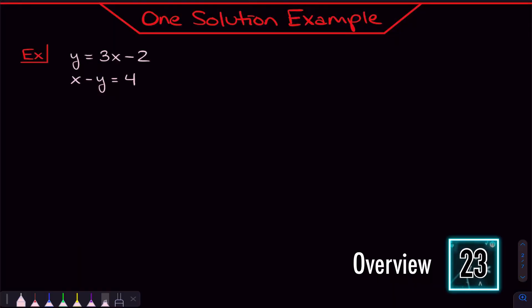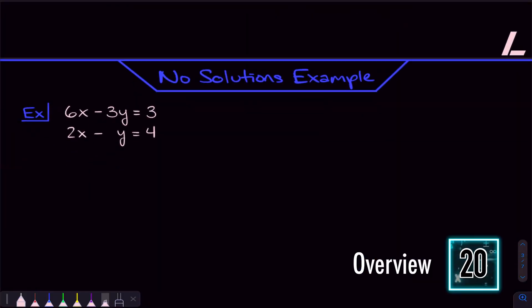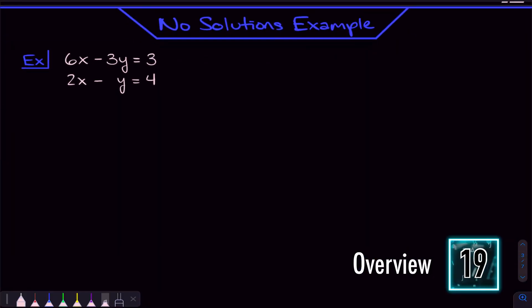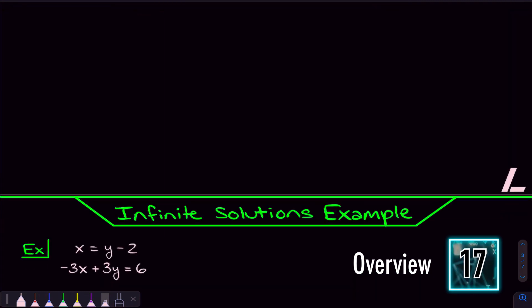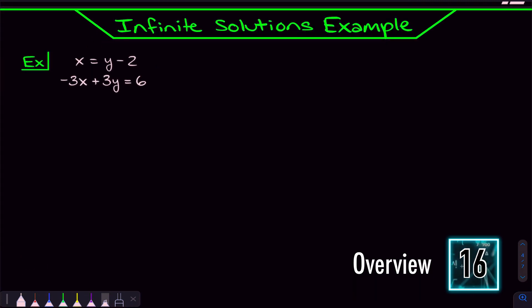By the end of this video, you're going to completely understand the difference between systems of equations with one solution, with no solutions, and with infinite solutions. We're going to start with an example that has one solution, then do another example with no solutions, and follow that up with an example with infinite solutions.